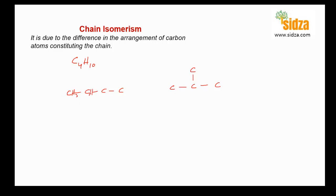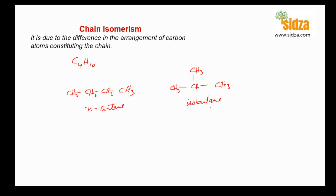The first structure is CH3-CH2-CH2-CH3, and this is called normal butane, or n-butane. The second one is called 2-methylpropane because you have CH3, CH, and two CH3 groups. This is 2-methylpropane, also known as isobutane, because there are four carbon atoms. So these two are chain isomers.